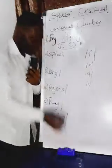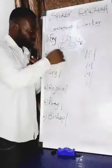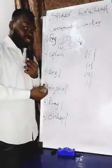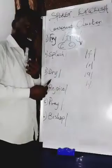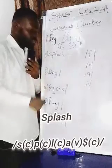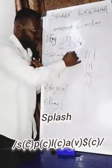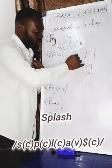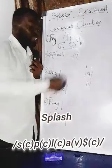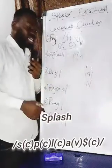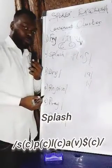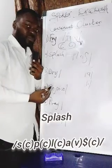Now for the second example, we are going to transcribe the word 'splash.' The first sound from 'splash' is the 'sss' — a fricative consonant — followed by 'p,' a plosive consonant, then 'l,' a lateral sound. After the 'l' we have the 'a' short vowel sound, and then finally 'sh,' which is also a fricative consonant.